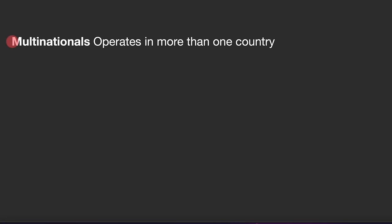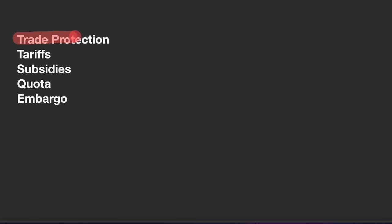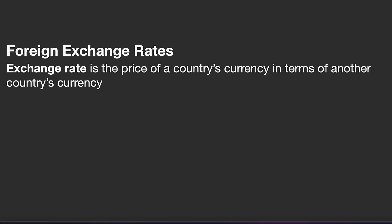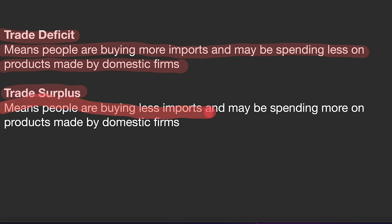Globalization is the process by which businesses or organizations develop international influence or start operating at an international scale. Multinationals operate in more than one country. Benefits of free trade include cheaper products, better products, more productive workers, increased international trade, increased competition, and lower prices. Forms of trade protection include tariffs, subsidies, quotas, and embargoes. The exchange rate is the price of a country's currency in terms of another country's currency. A trade deficit means people are buying more imports and spending less on domestically produced goods. A trade surplus means people are buying fewer imports and may be spending more on products made by domestic firms.